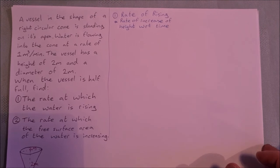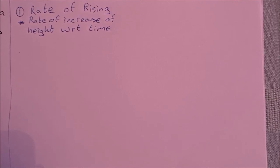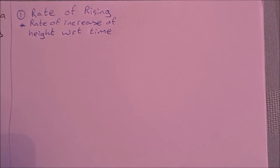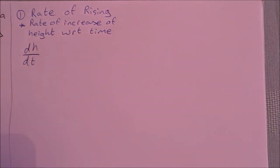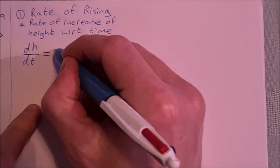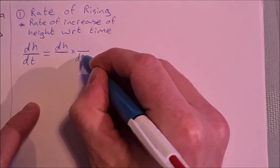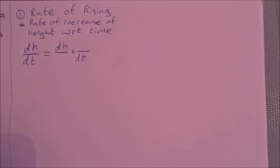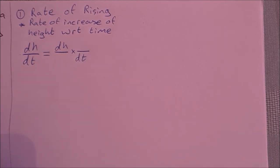Let's have a look at part one. The rate of rising, which we could call the rate of increase of height with respect to time, is dh/dt. This is a rates of change question, so I'm using the chain rule and I need to split up dh/dt. So dh goes on one fraction and it's multiplied by the second fraction which will have dt in the denominator. I put in the same thing in both middle positions to keep it balanced.